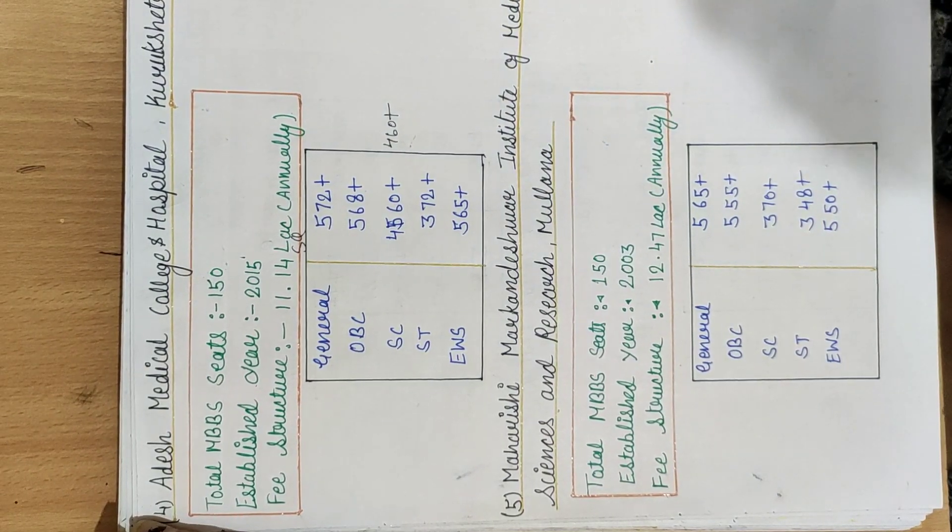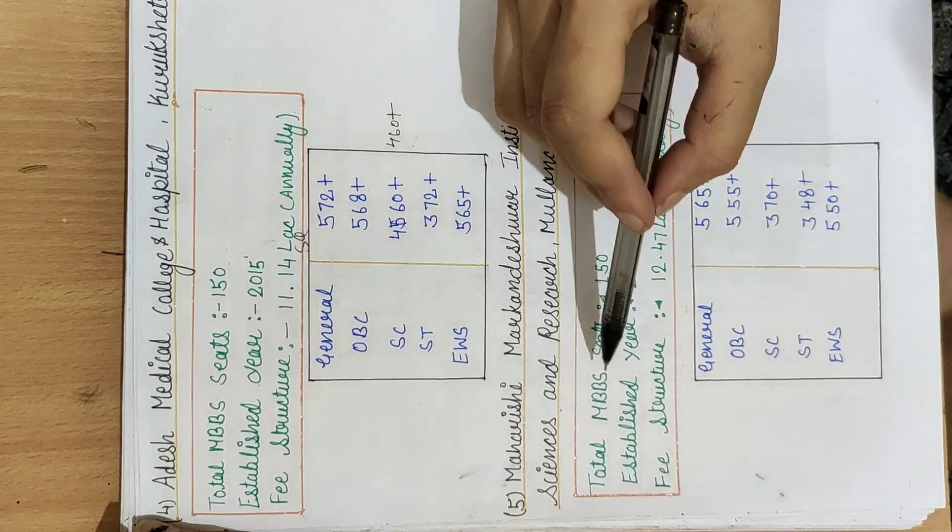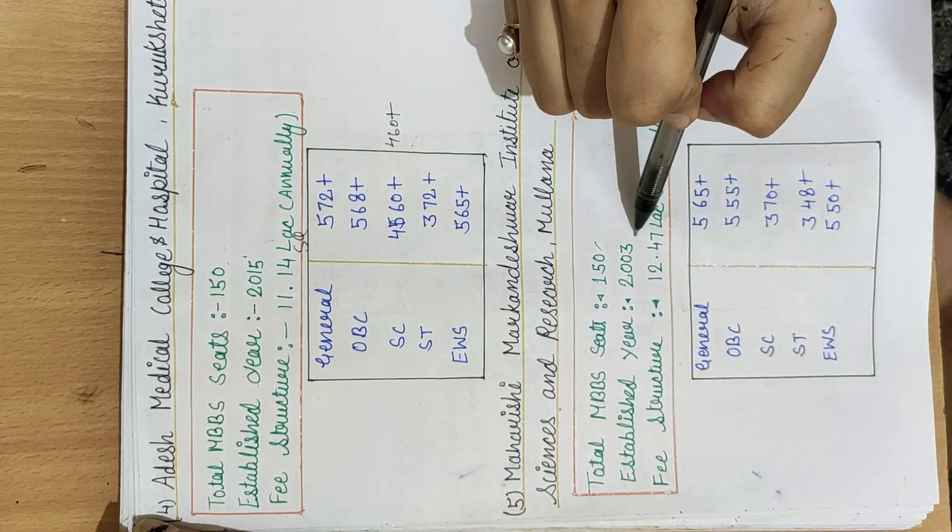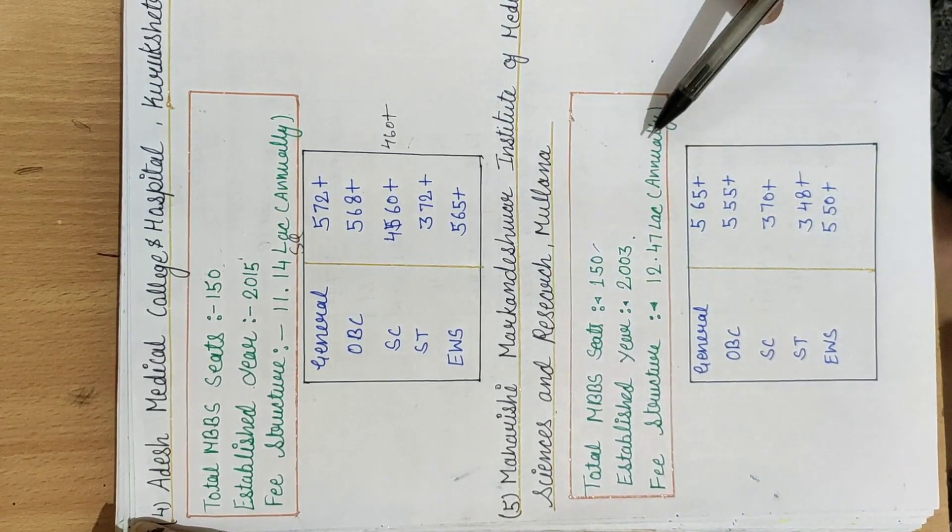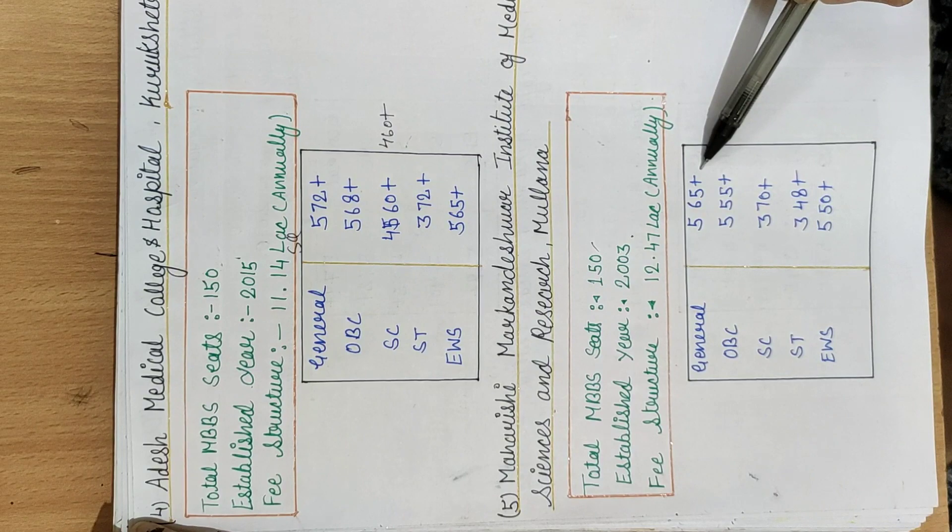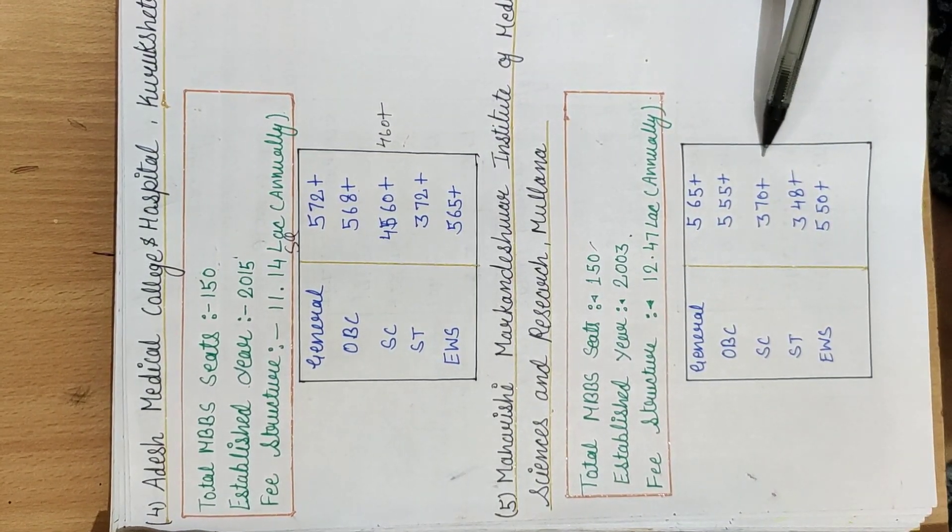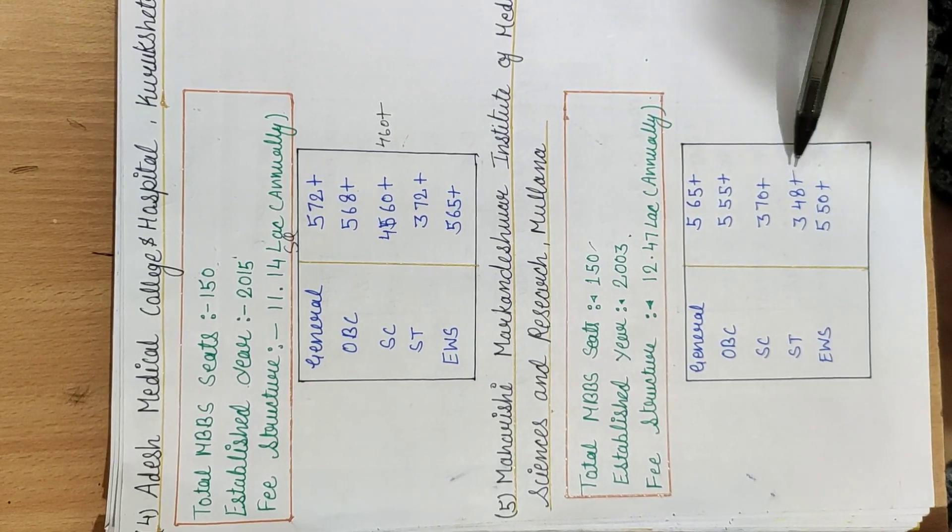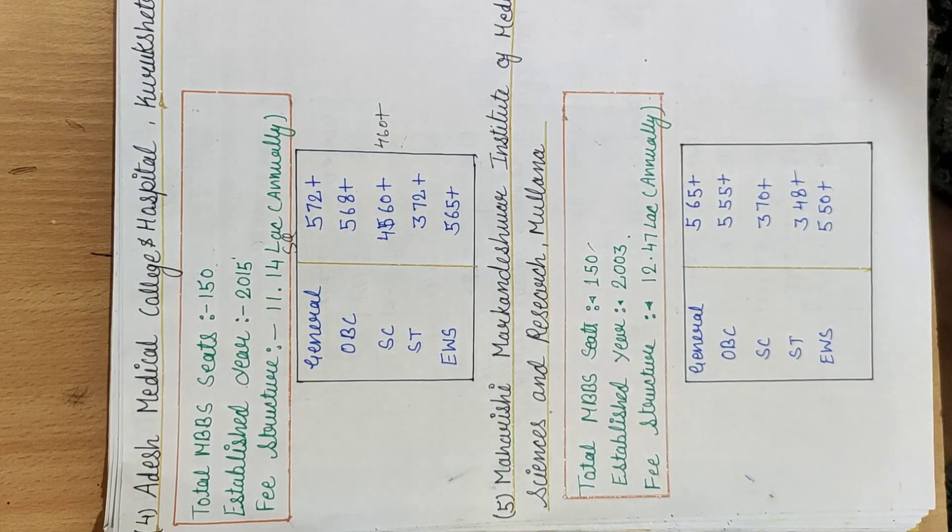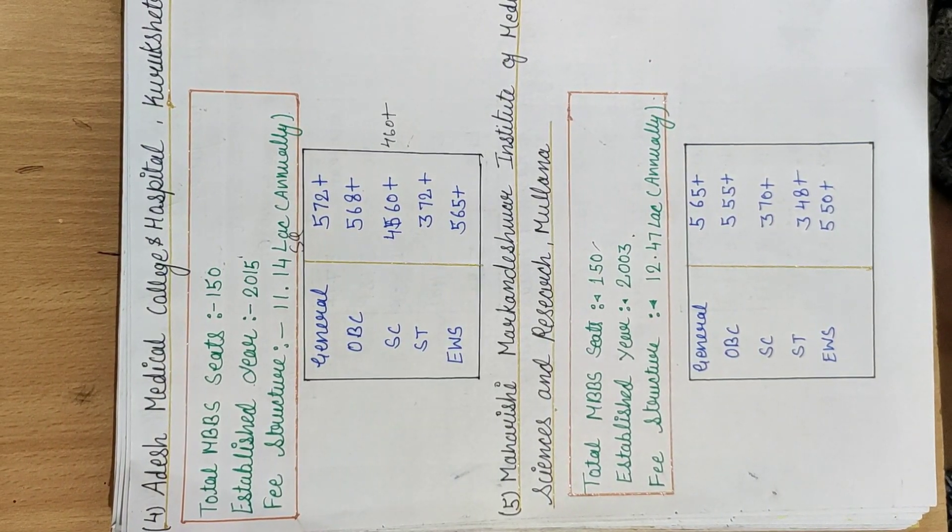Next, Maharishi Markandeshwar Institute of Medical Science and Research, Mullana. Total MBBS seats are 150, establishment year 2003. Its fee structure is 12.47 lakh annually. For general 565 plus, OBC 555 plus, SC 370 plus, ST category 348 plus, and for EWS 550 plus. I have provided all information in the video description with links.